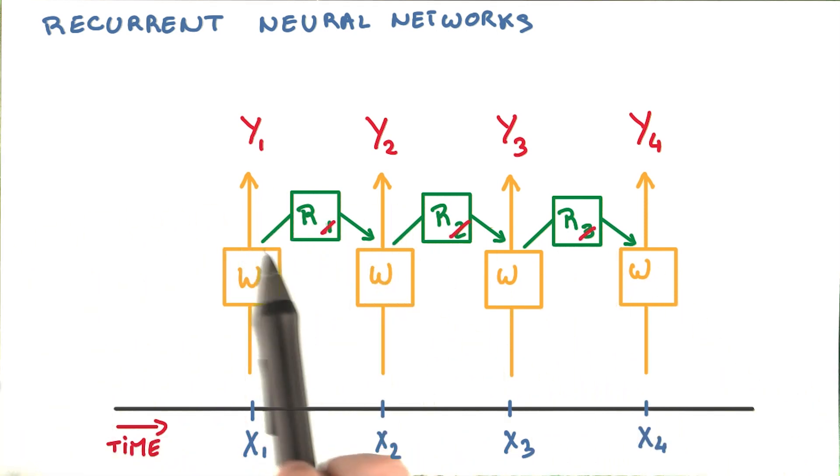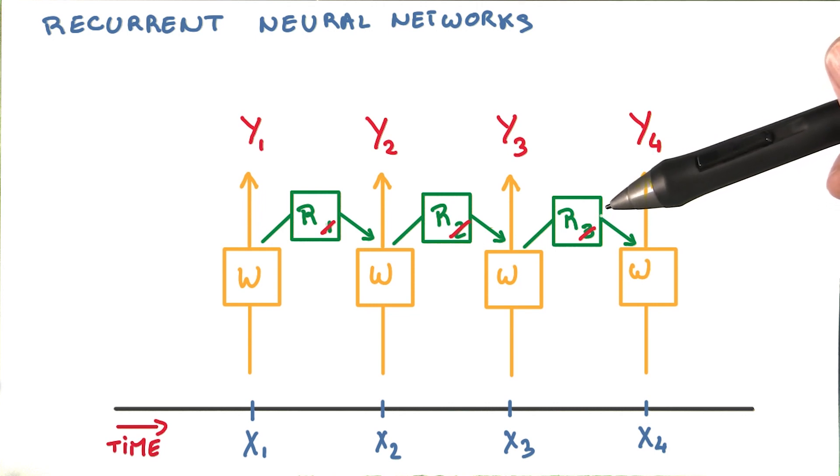But instead, we're going to use tying again, and have a single model responsible for summarizing the past and providing that information to your classifier.